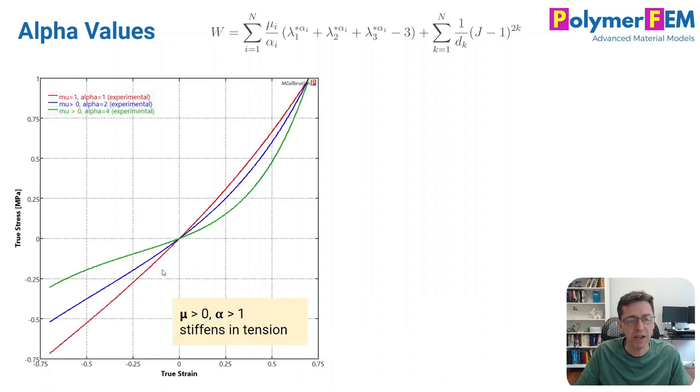Here is stress-strain data for three different cases. The red curve I used mu equal to 1, alpha equal to 1. So this is uniaxial compression, uniaxial tension. It's almost a straight line if mu alpha is equal to 1. If I increase alpha, let's take, for example, the blue curve. Now I increased alpha to be 2.